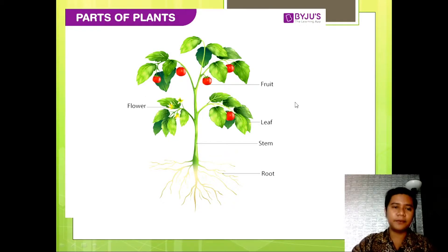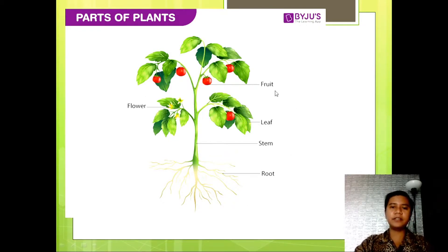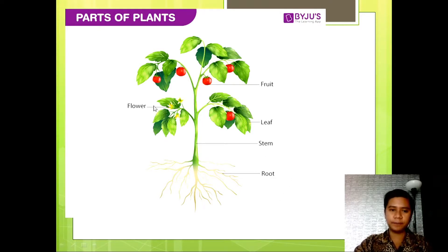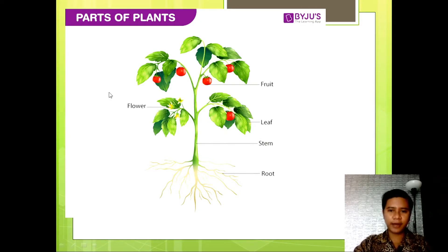So the five parts of the plant — let's try to read again. Number one is fruit. Number two is leaf. Number three is stem. Number four is root. Number five is flower. Very good.